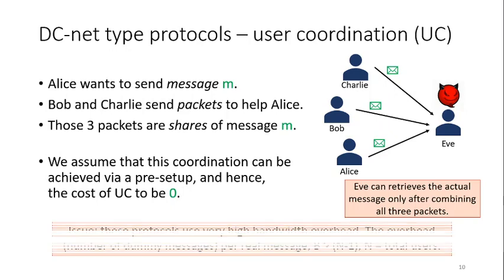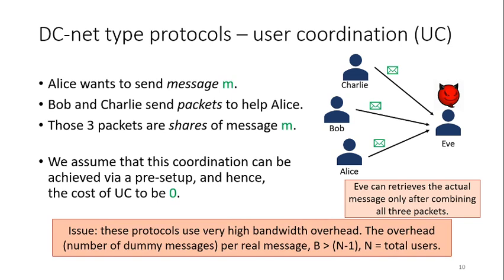Even with that assumption, user coordination suffers from bandwidth overhead. For each message Alice wants to send, each of Alice, Bob, and Charlie sends one packet. So if there are N users, there are N minus one extra packets — and that's a lot of bandwidth overhead.